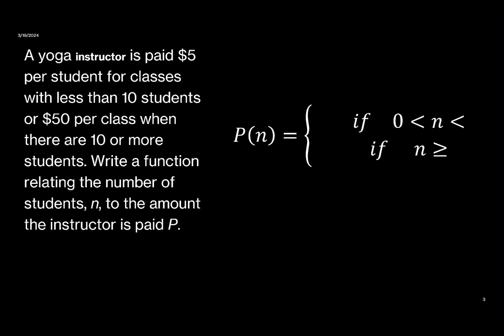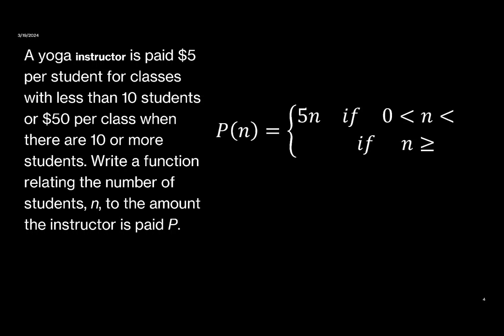So let's start when we have less than 10 students. With less than 10 students, the instructor is paid $5 per student, so we need to multiply 5 times the number of students n, so we would write that as 5n.